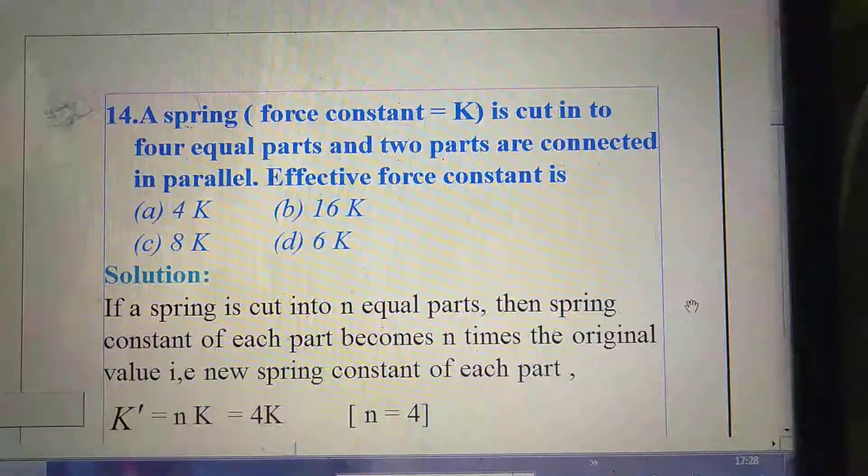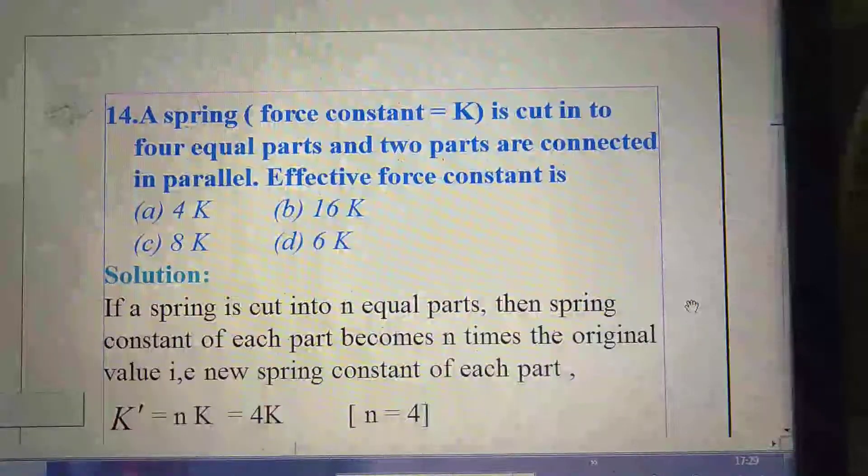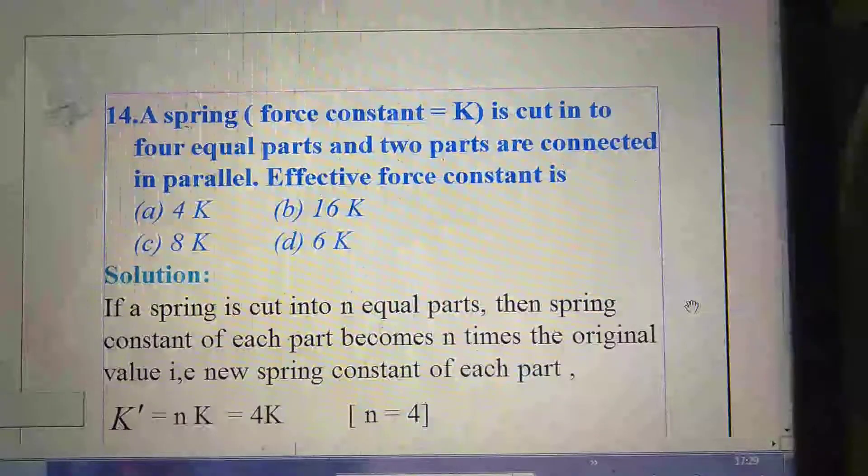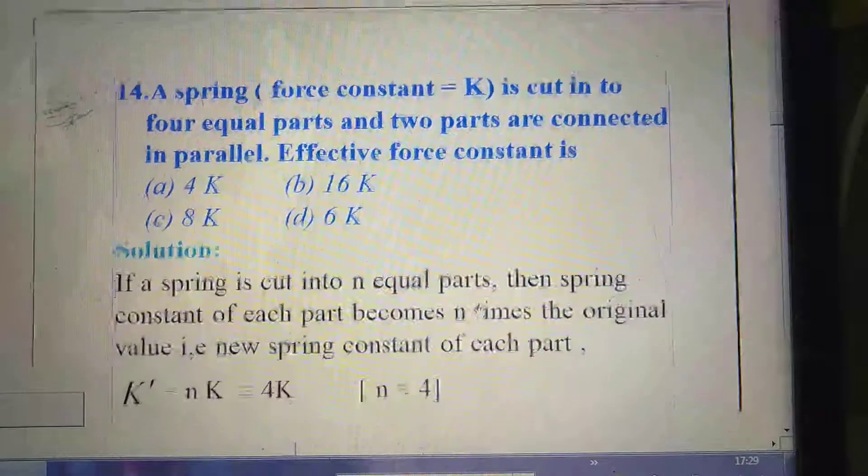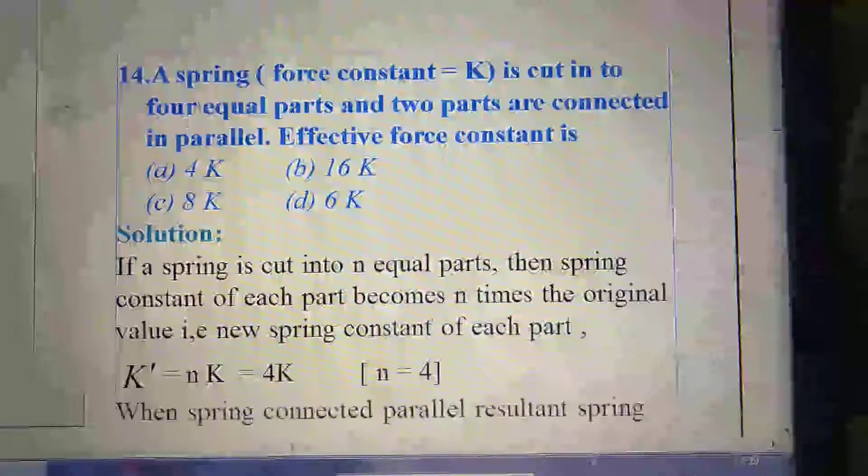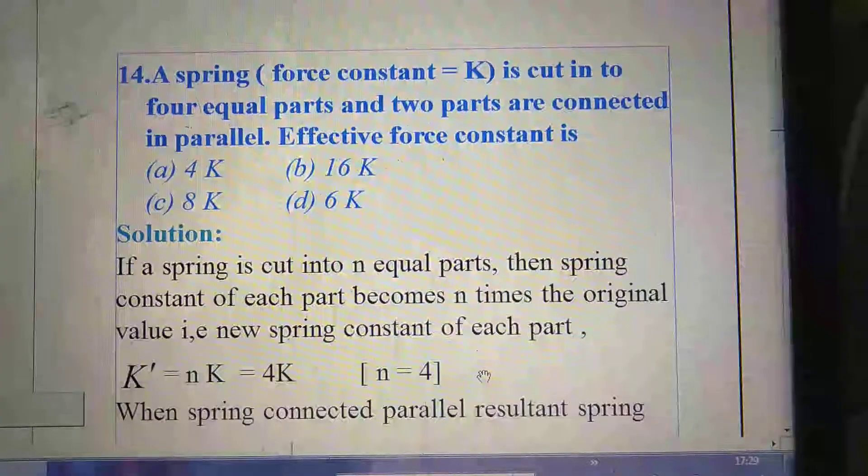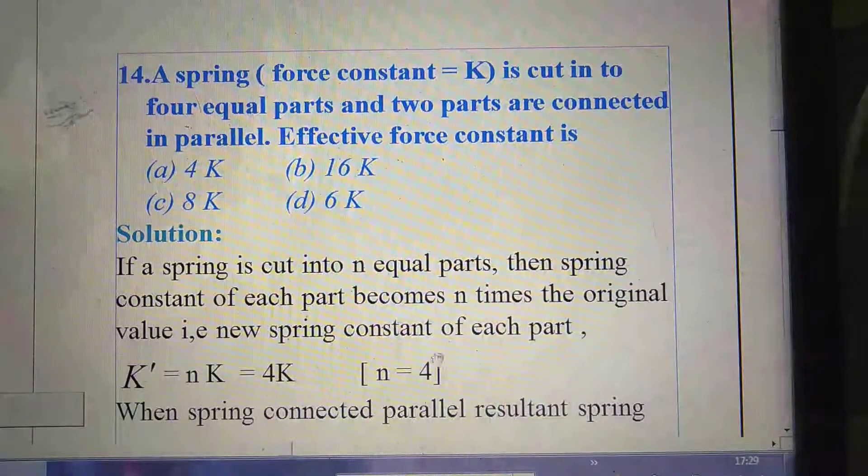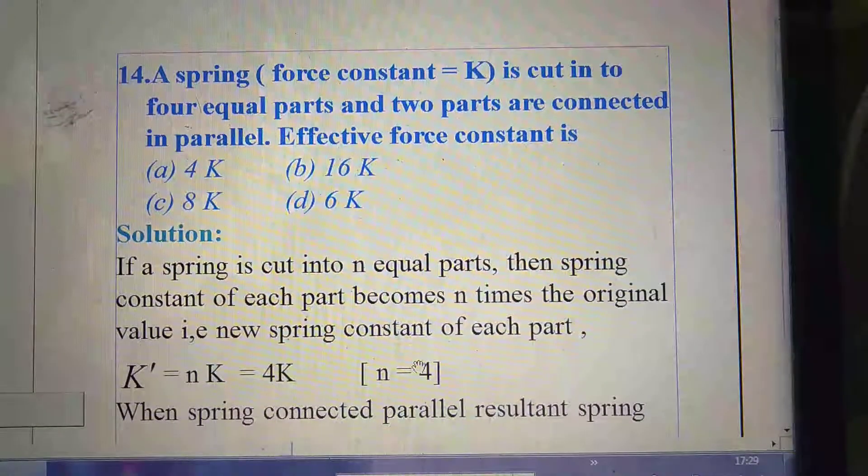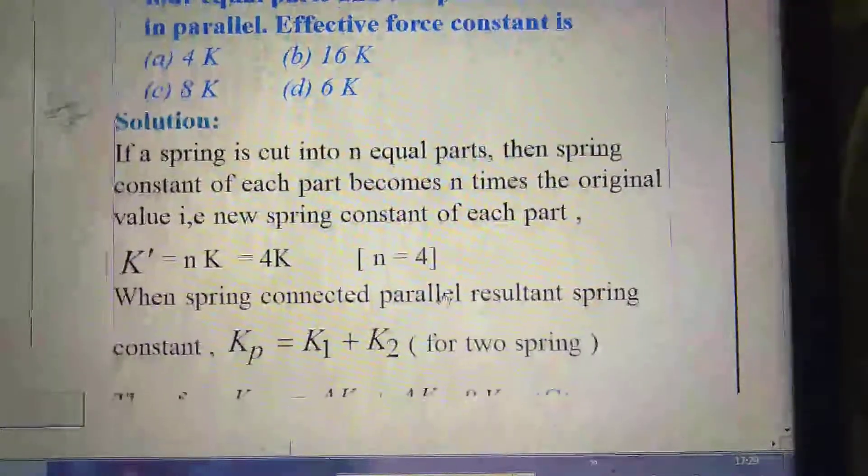Next question. So first of all, we have to find out after cut, each part spring constant value. So we know, what is the formula? If a spring cut into n parts, then each part spring constant is n times of original spring constant. Here, n = 4.